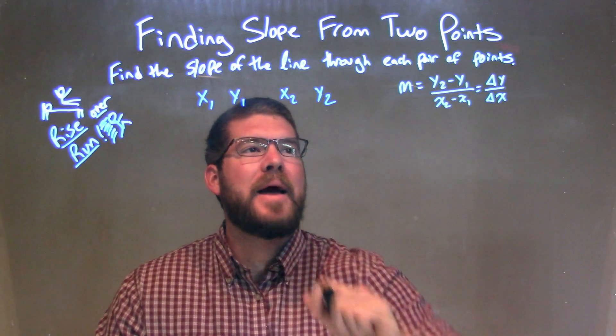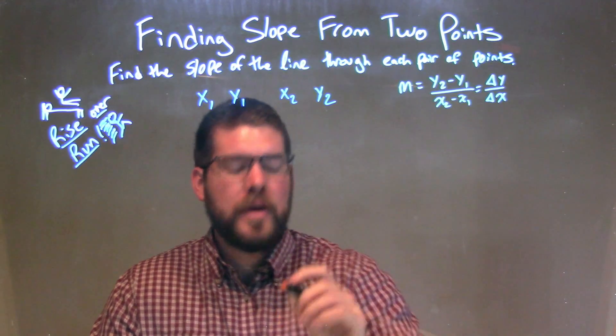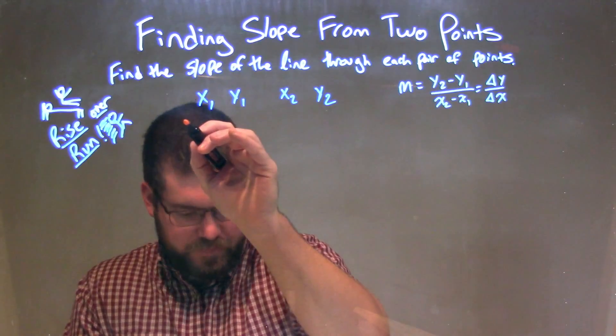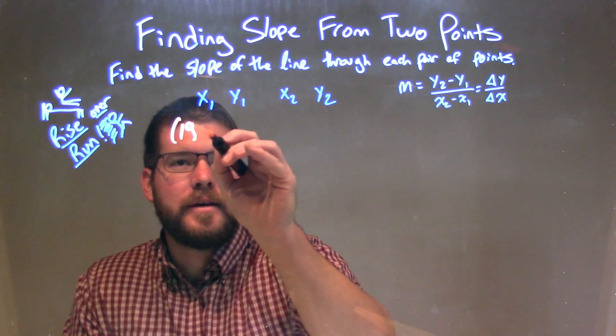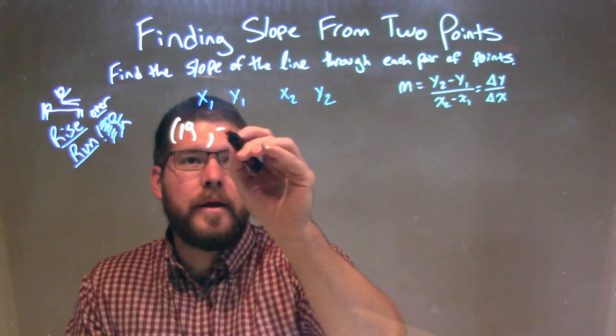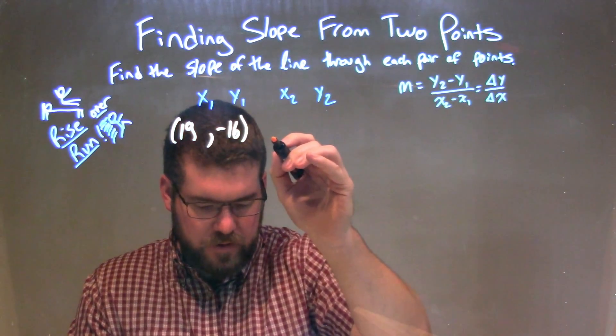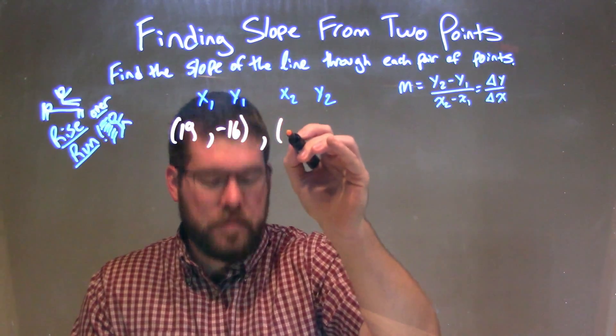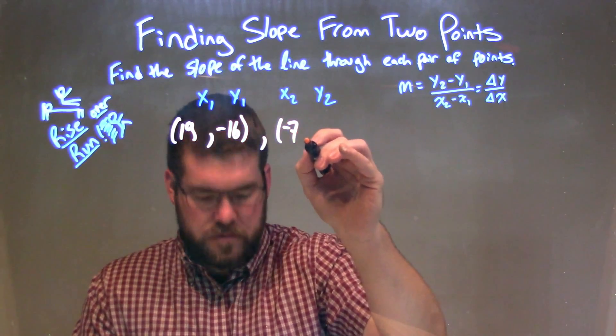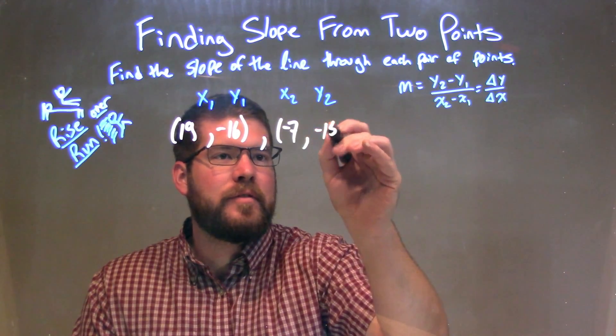We're going to find the slope of the line through each pair of points. So if I were given these points here: 19, negative 16, and my second point here is negative 7, negative 15.